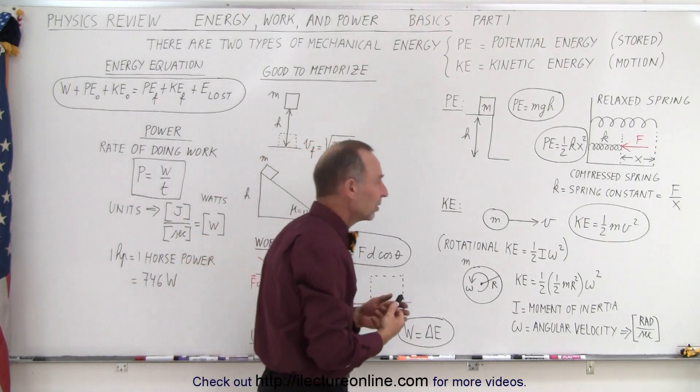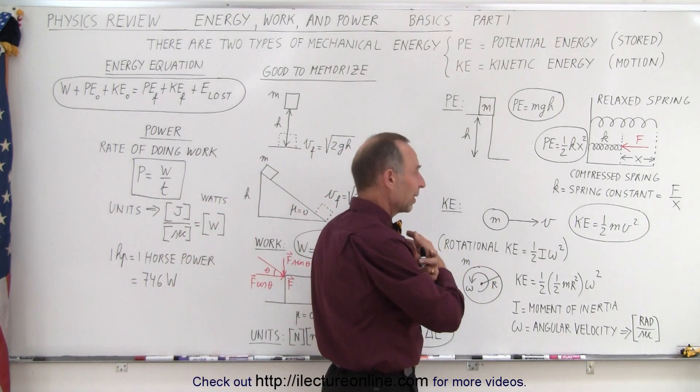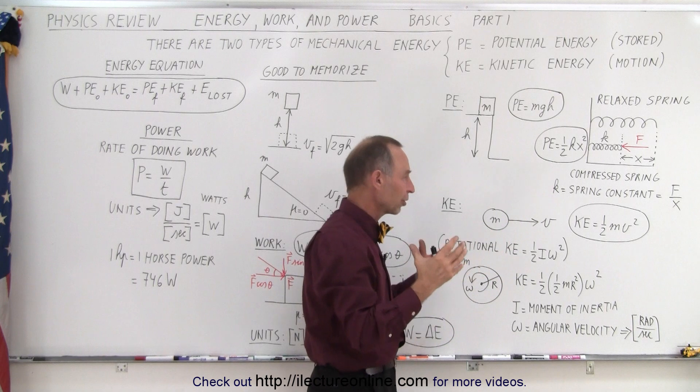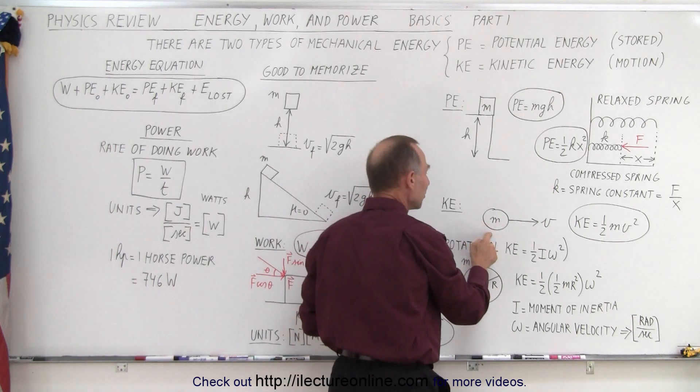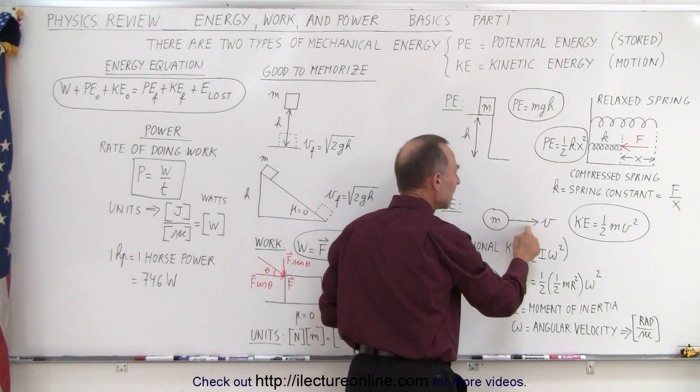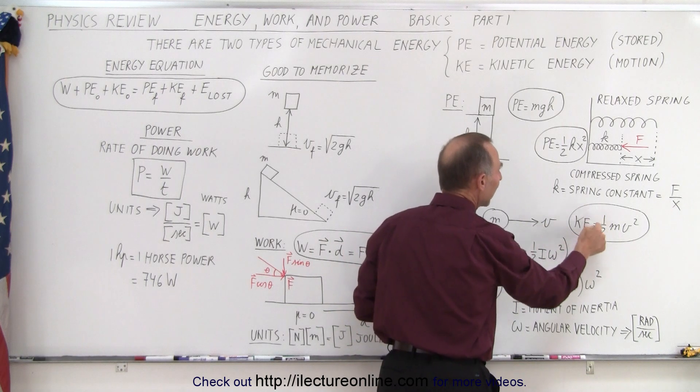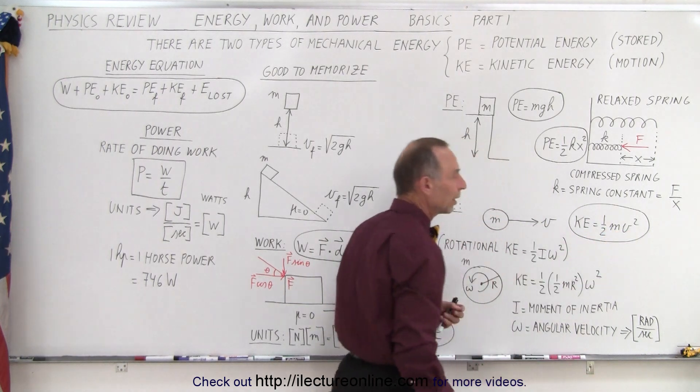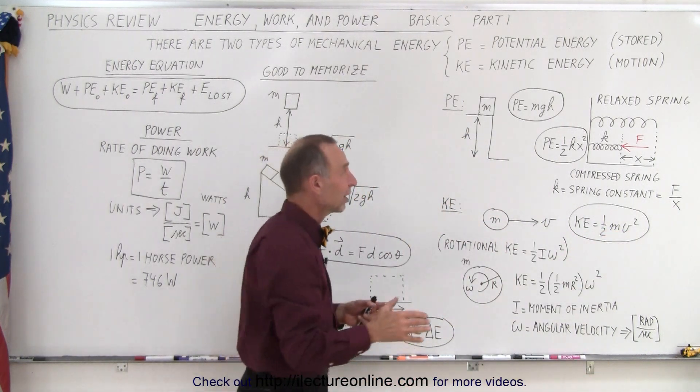Kinetic energy is always going to be the same. It's a universal equation that applies everywhere in the universe under all circumstances. When an object that has mass is moving with velocity v, it has kinetic energy equal to one-half the mass times the velocity squared.